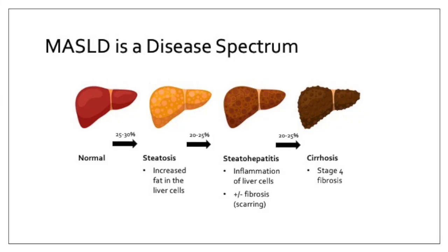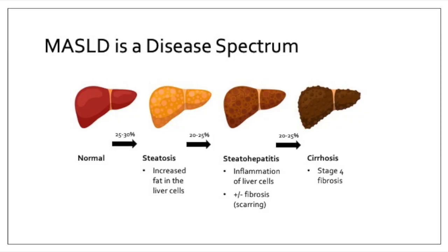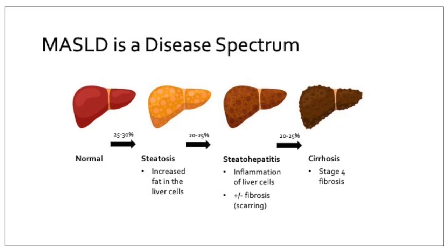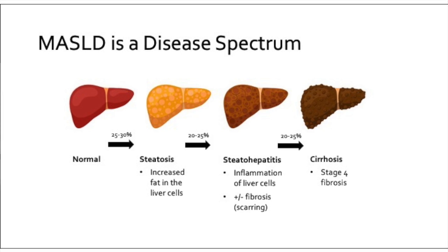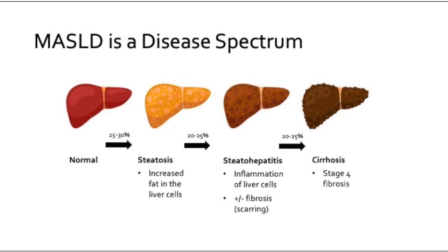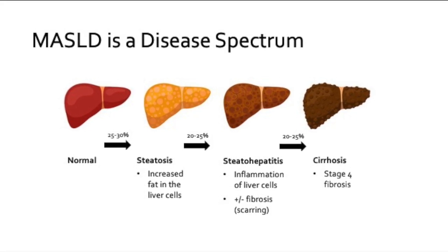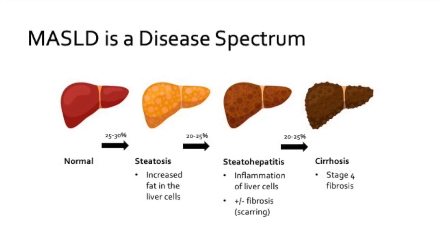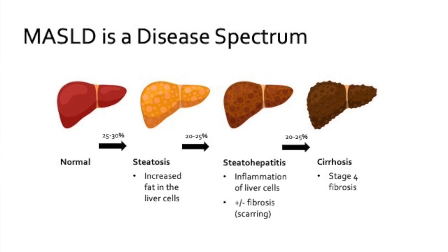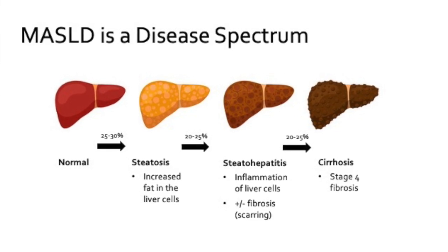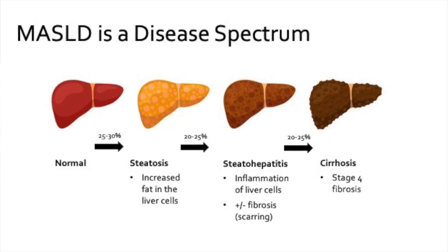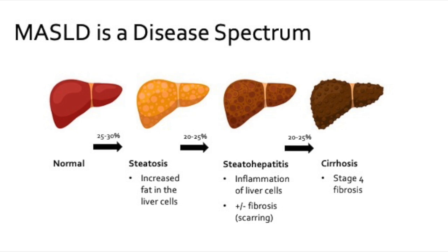MASLD is a disease spectrum. It doesn't mean that everyone who has MASLD is going to go into liver failure, or everyone is going to have cirrhosis or need a liver transplant. In fact, the majority of patients don't end up progressing to cirrhosis and needing a liver transplant. Doesn't mean we shouldn't care about it and address it, but it is very much a disease spectrum that occurs in stages.